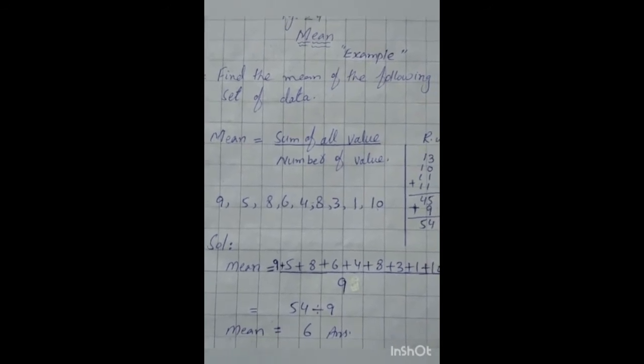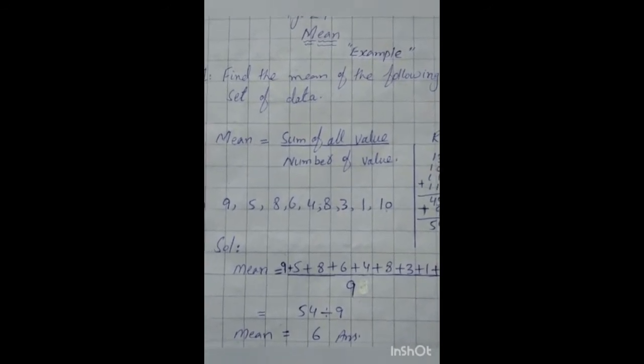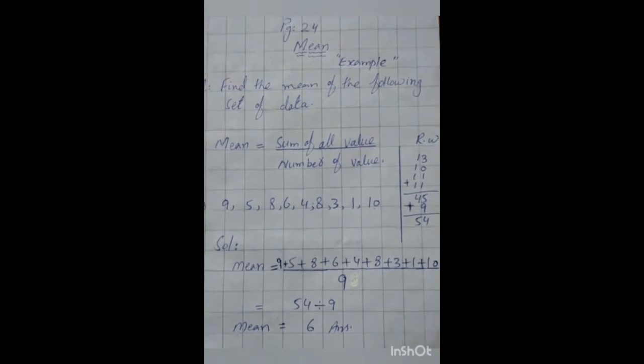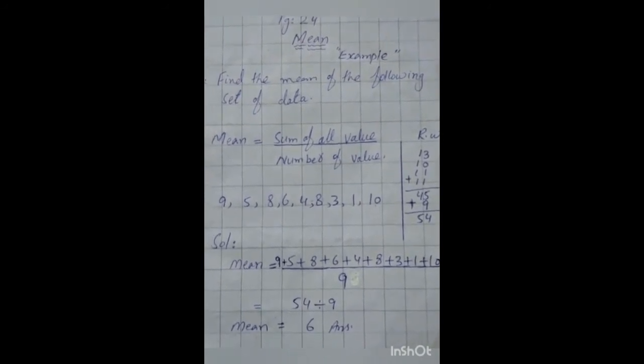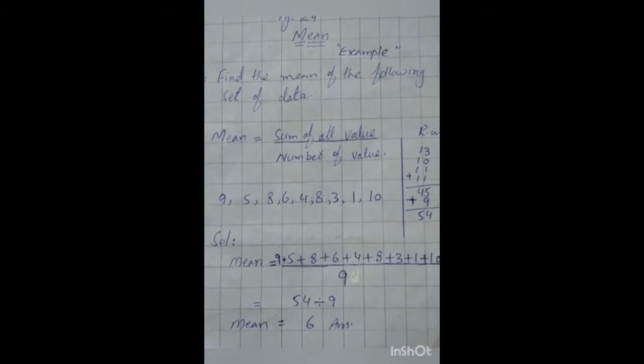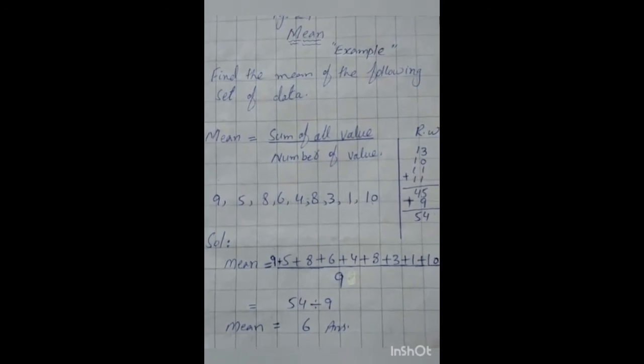In this question, we have to find out the mean, mode and median. Firstly, we will find out the mean in all questions A to H. We have a formula to find out the mean. Mean is equal to sum of all values divided by number of value.